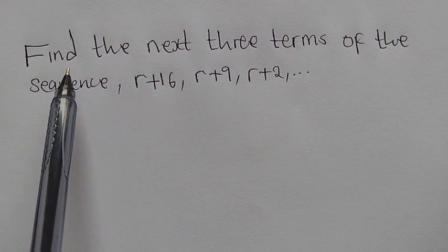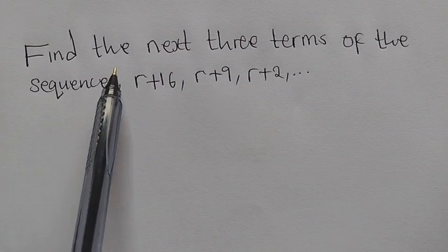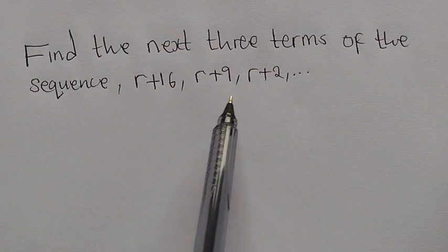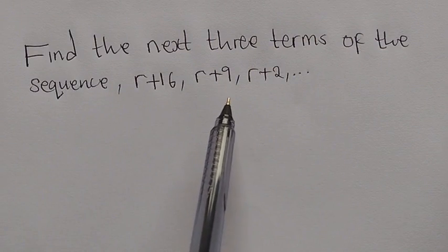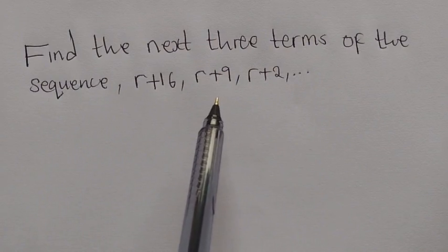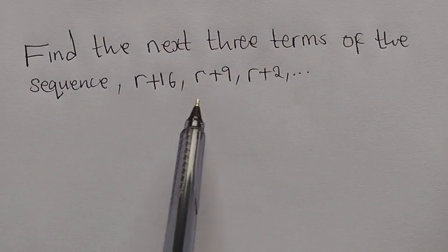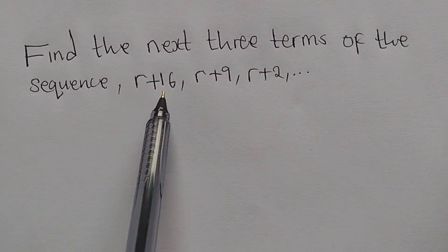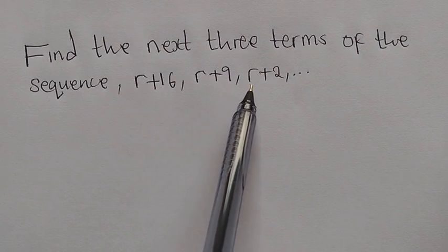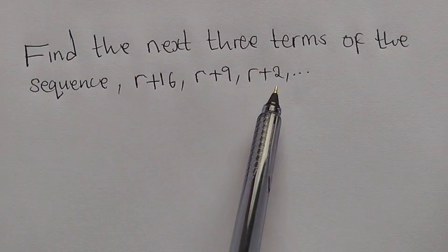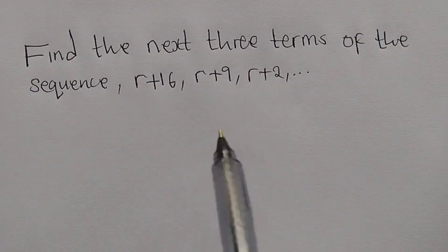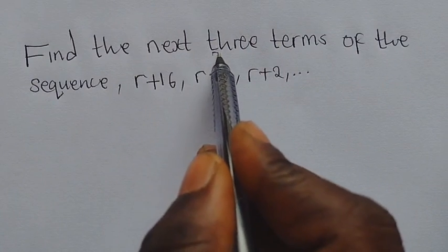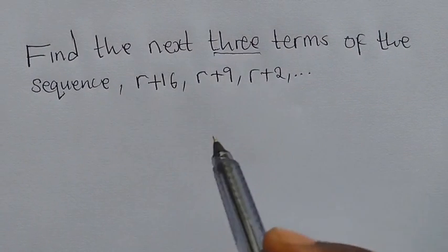The question reads: find the next three terms of the sequence. So this is an AP — an arithmetic progression sequence — with terms R plus 16, R plus 9, and R plus 2. The question wants us to find the next three terms.